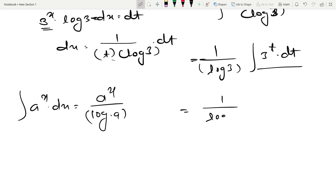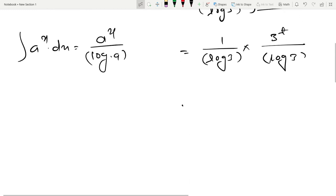So this gives 1 upon log of 3 times 3 to the power t divided by log of 3. With log of 3 in both numerator and denominator, log of 3 times log of 3 gives log of 3 squared, so 3 to the power t divided by log of